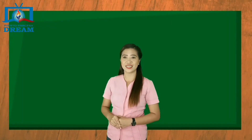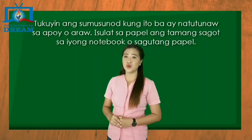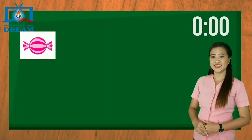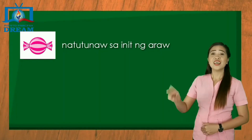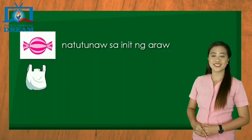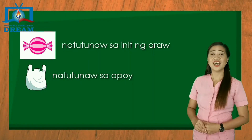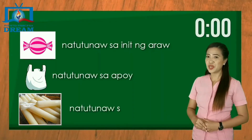Malinaw na ba sa inyo ang ating aralin? Sikapin nating gawin ang susunod na pagsasanay. Handa ka na ba? Tukuyin ang sumusunod kung ito ba ay natutunaw sa apoy o sa araw. Isulat ang tamang sagot sa iyong notebook o sagutang papel. Una — Candy: natutunaw sa init ng araw. Ikalawa — Plastik: natutunaw sa apoy. Ikatlo — Ice Candy: natutunaw sa init ng araw.